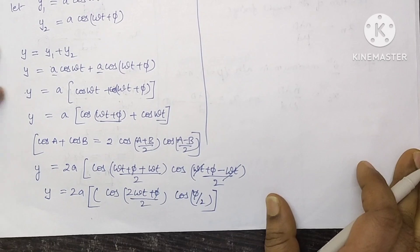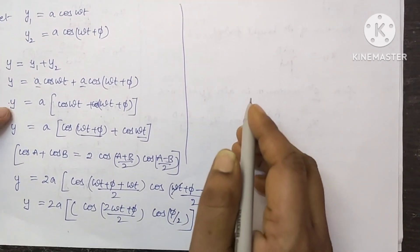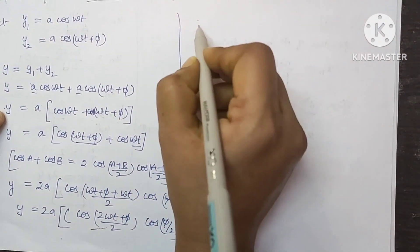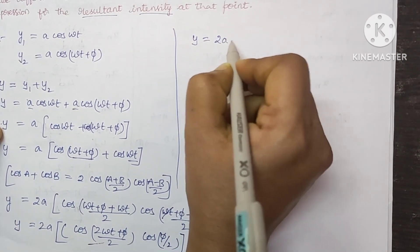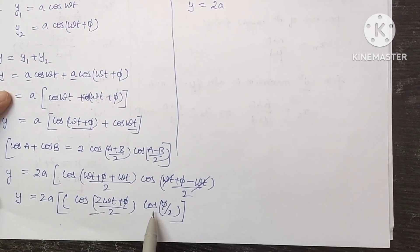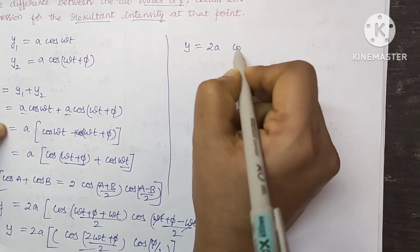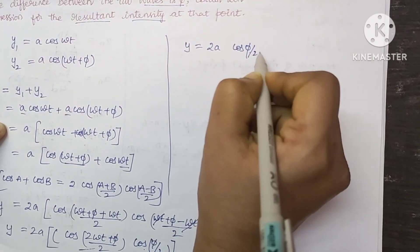Now let us do the remaining derivation. So here the equation is y equals 2A, just I am rewriting this first, cos phi by 2.